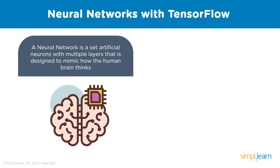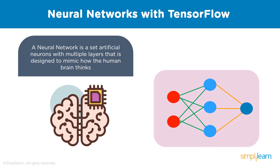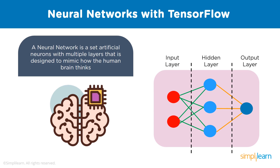What exactly are neural networks? Neural networks are a set of artificial neurons with multiple layers designed to mimic how the human brain works. A neural network contains layers of interconnected nodes. The first layer is the input layer containing our input tensors, each with a weight associated with them depending on their importance to the output layer. The hidden layer in the middle helps fine-tune the input weightings until the neural network's margin of error is minimal.